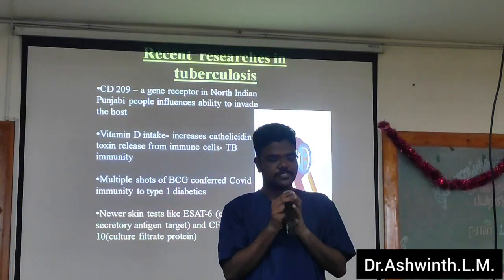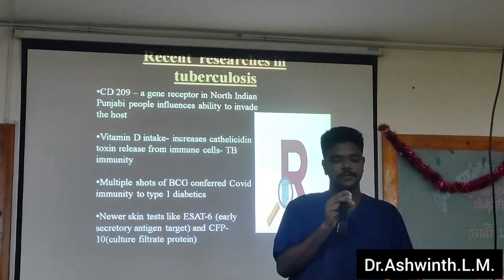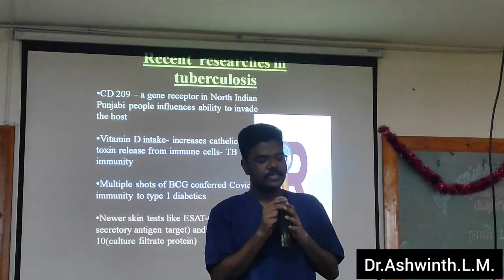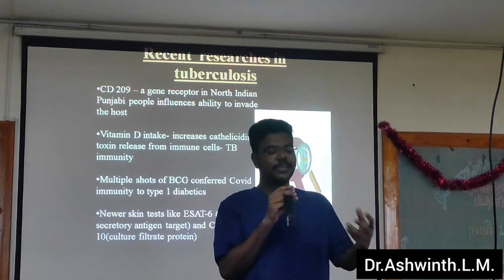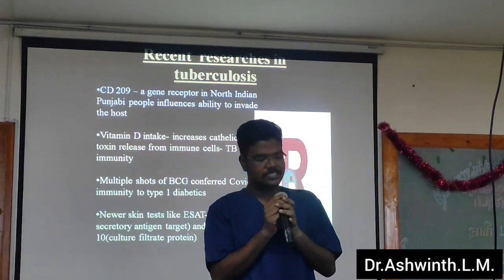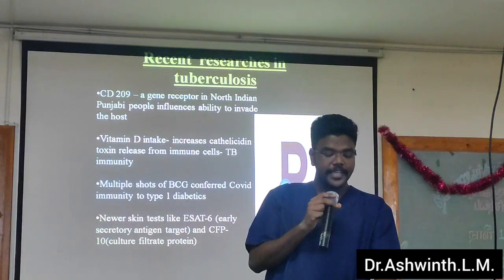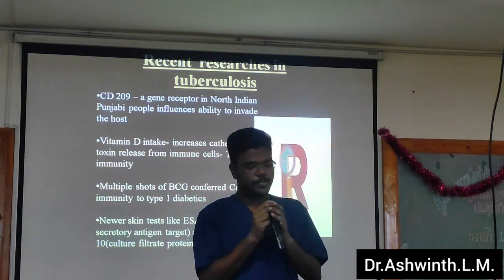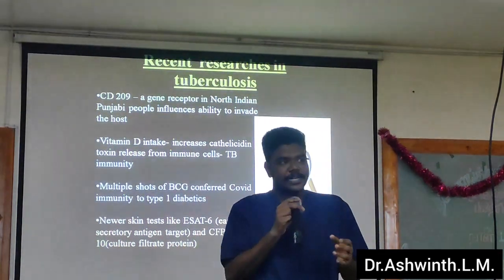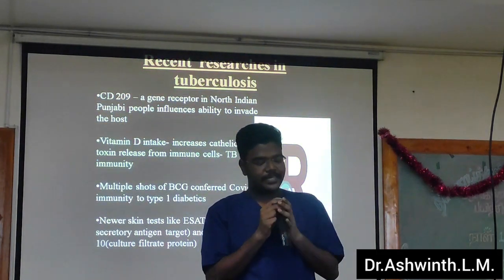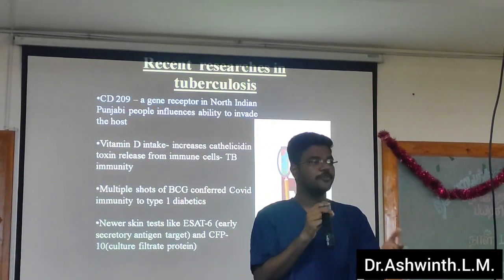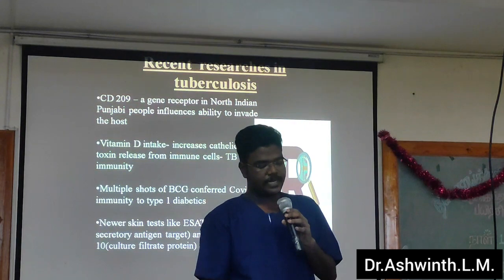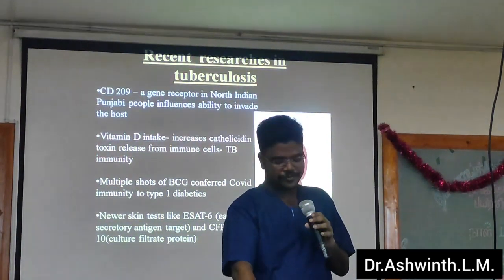GeneXpert is a recent diagnostic technique which uses a cartridge-based diagnostic system using nucleic acid amplification for diagnosis of tuberculosis. Coming to recent researches in India, researchers found out a CD209 receptor in a particular ethnic group, and that receptor had an influence to allow the pathogen to invade the host. The second research shows that intake of vitamin D will increase cathelicidin release from immune cells, which can control tuberculosis immunity. Also, multiple shots of BCG given to high-risk patients surprisingly gave better immunity. Newer tests like ESAT-6, early secretory antigenic target, and purified protein derivative are tests used for the diagnosis of tuberculosis.